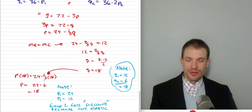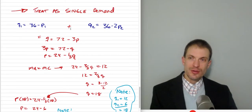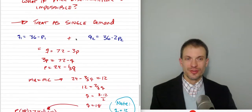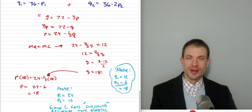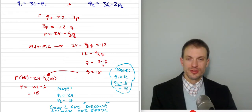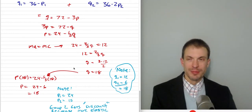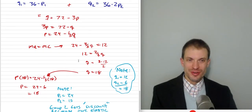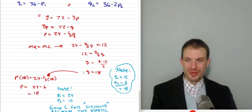Notice something interesting about the quantity: without price discrimination, the firm sells a total of 18 units. But with third-degree price discrimination, it sold 12 plus 6 — also 18 total. This is always true with linear demand: a monopolist produces the same total quantity whether or not it uses third-degree price discrimination. This serves as a good robustness check on your work.